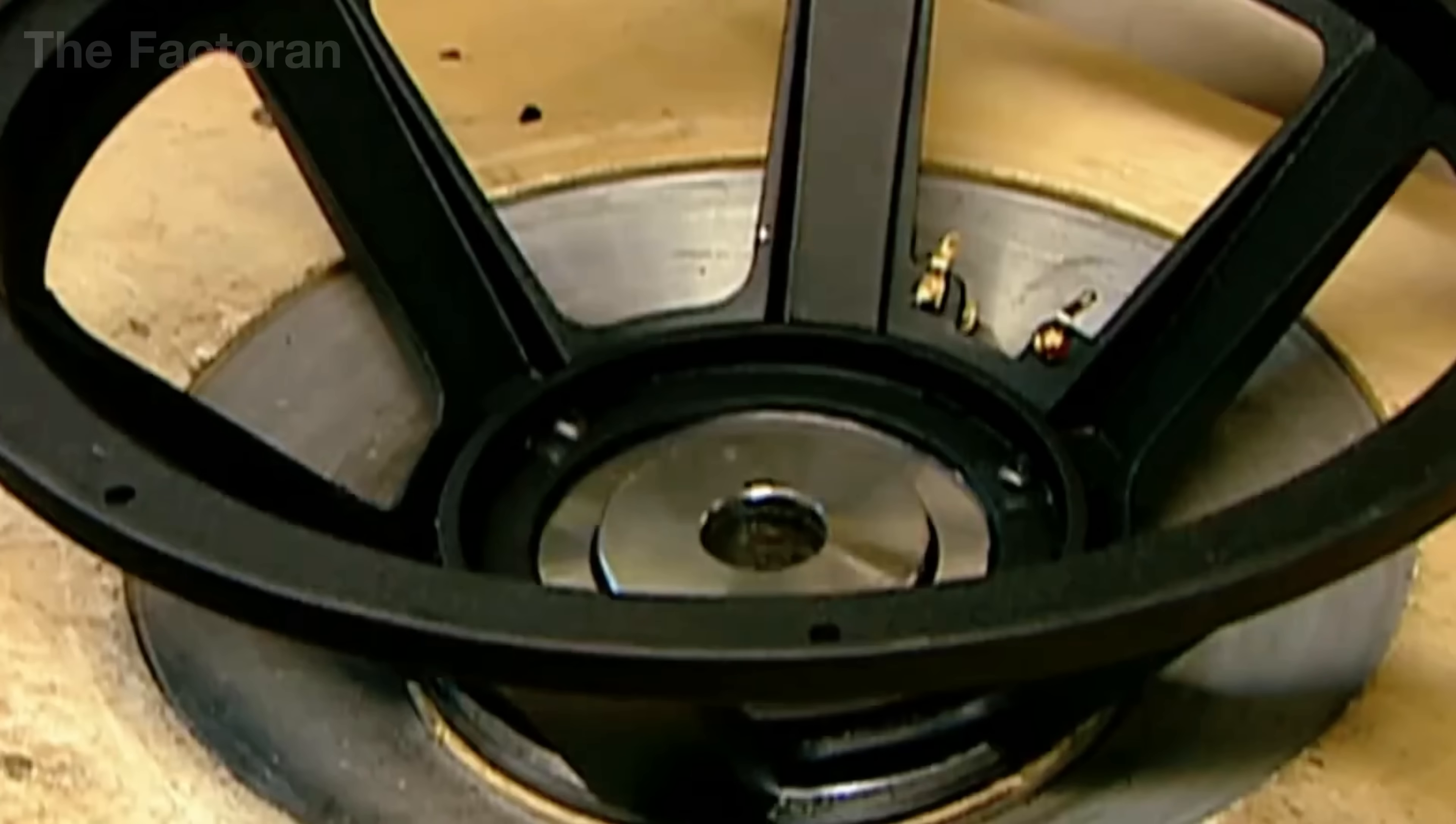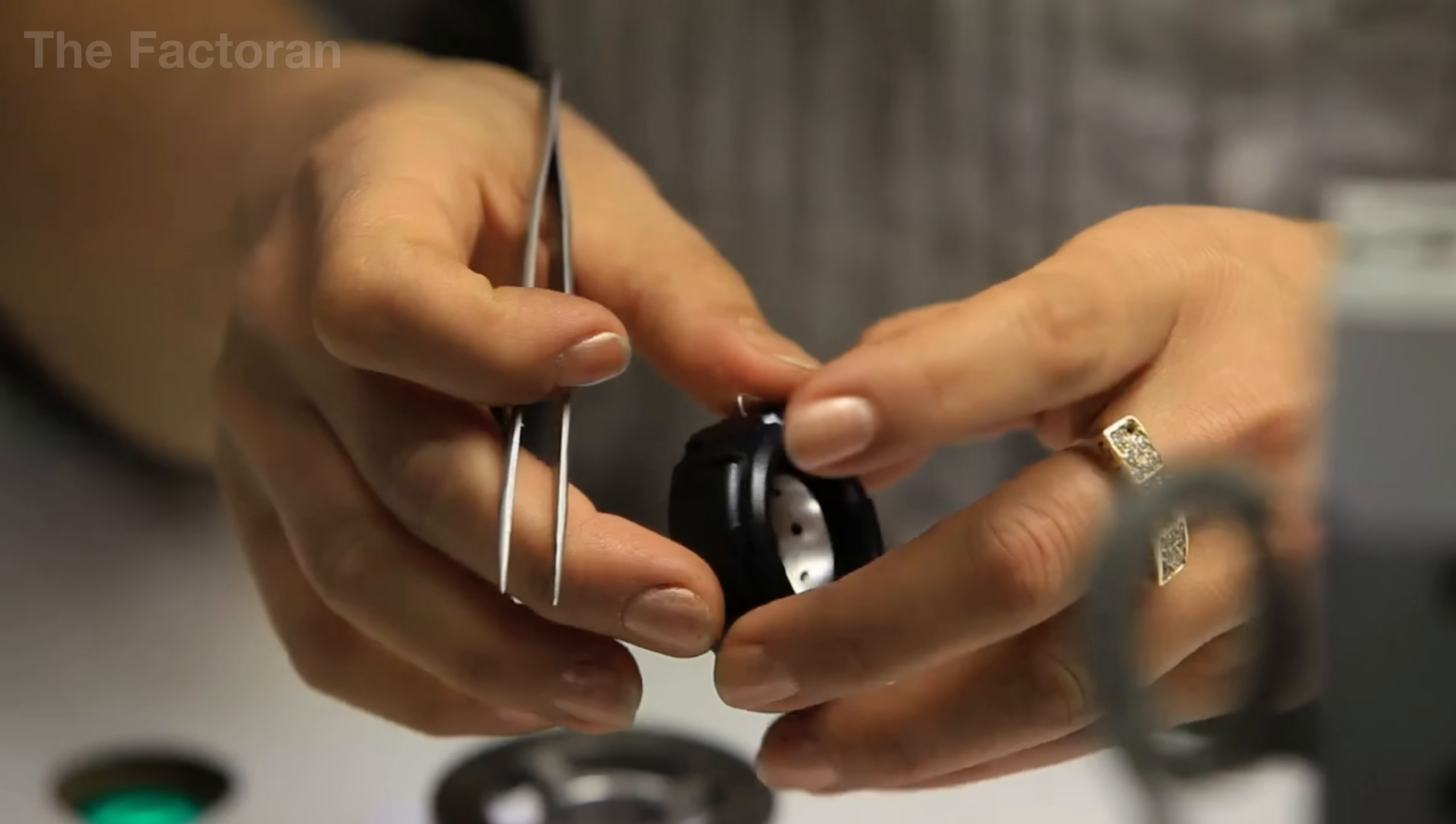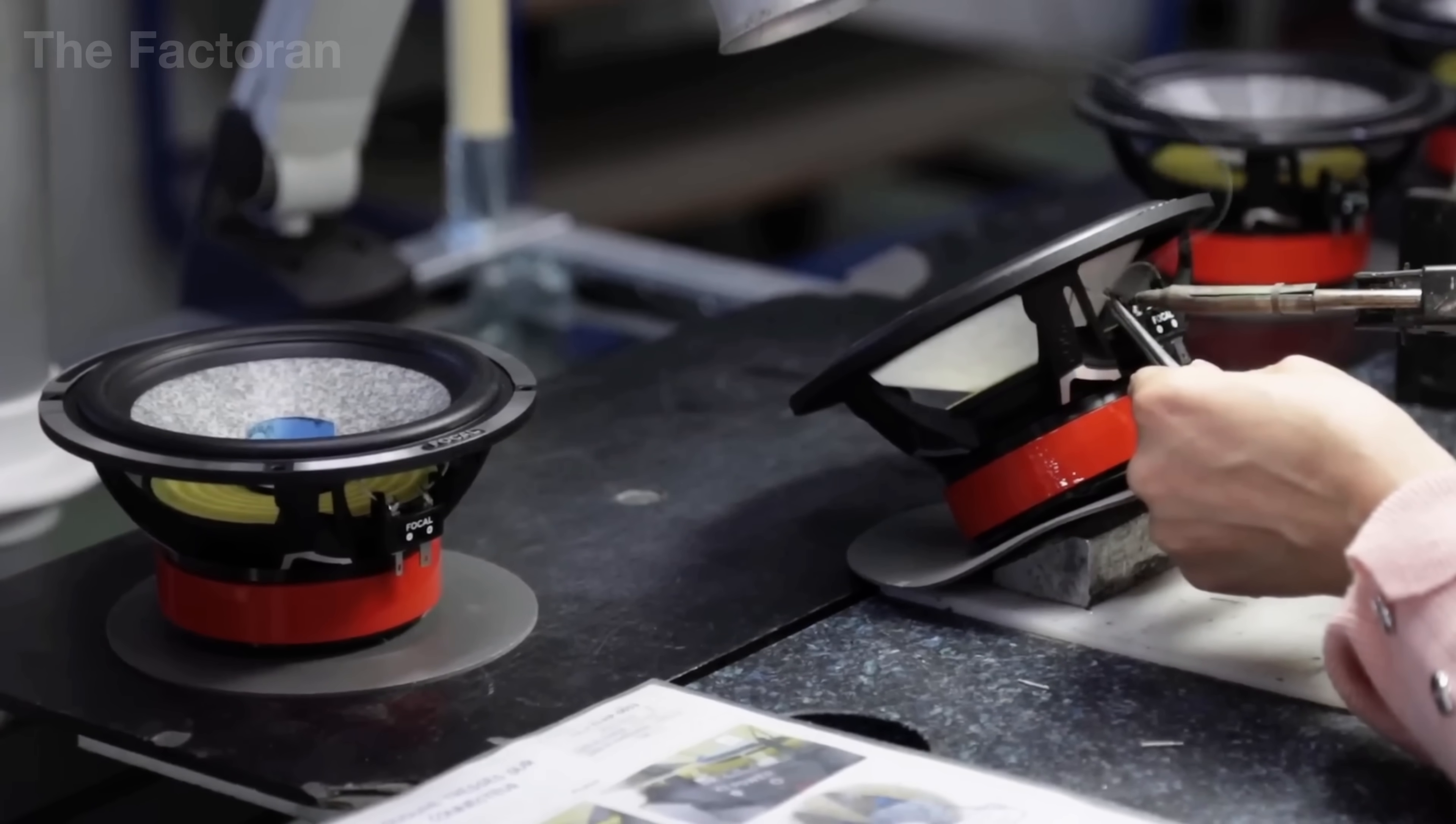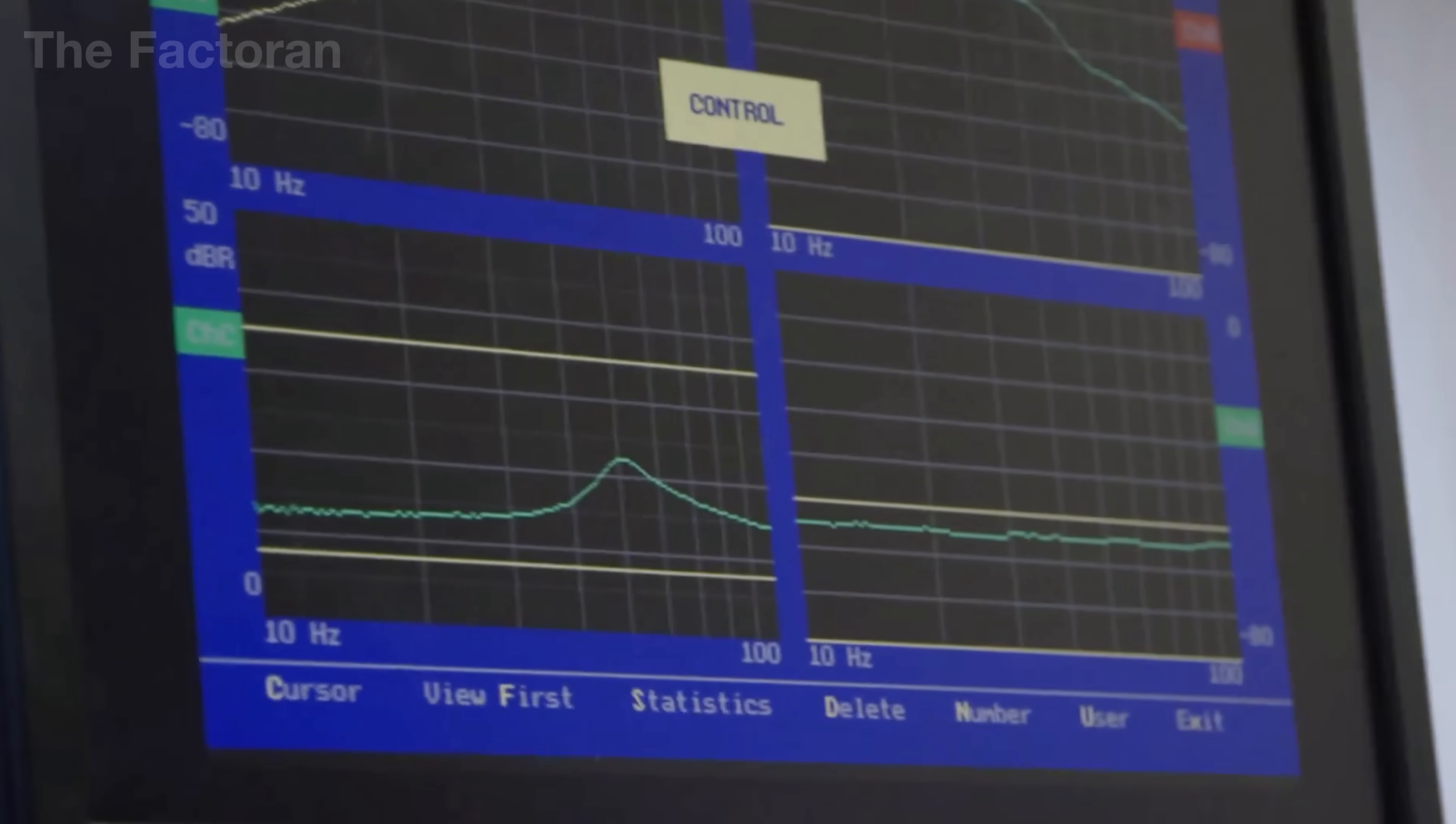Finally, the spider is bonded onto the frame. This component ensures that the voice coil moves strictly along one axis, without lateral drift and without twisting under high-frequency oscillation. Once the spider adhesive has fully set, the magnetic mechanical assembly is unified, completing a fully formed driver core.